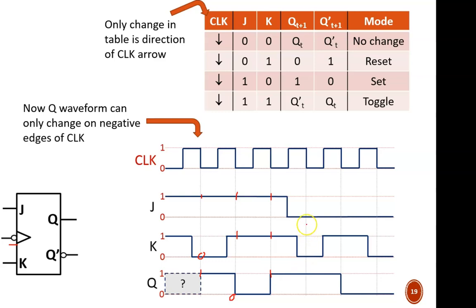One clock cycle later, it is no change mode, so Q remains at a value of 1. Next comes reset mode, so Q equals 0. And finally, I see no change mode, so Q remains at 0.